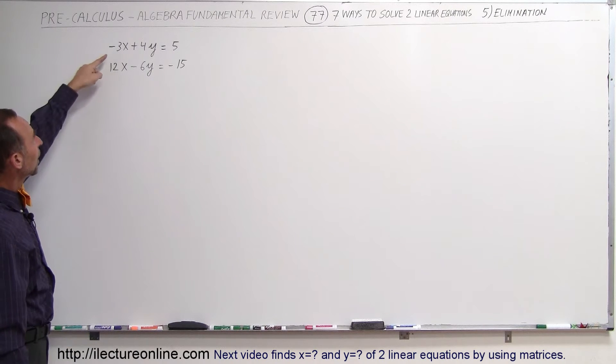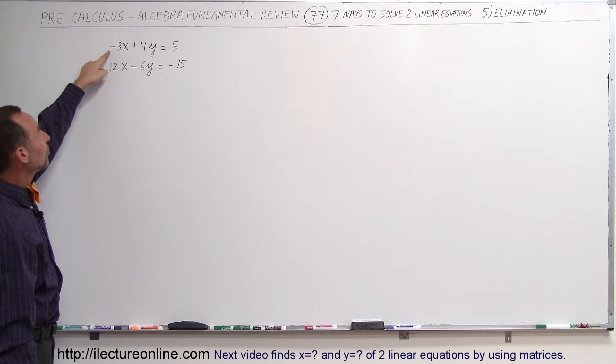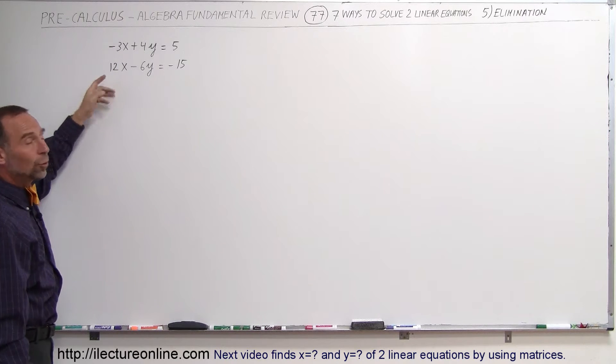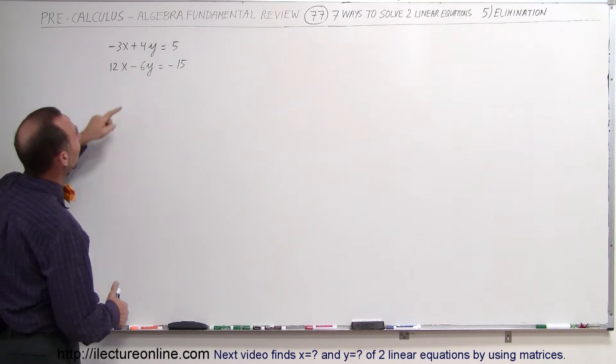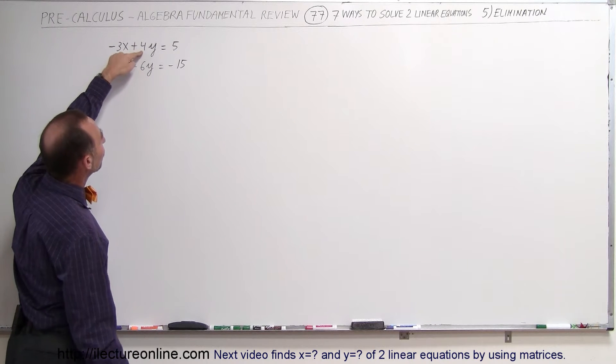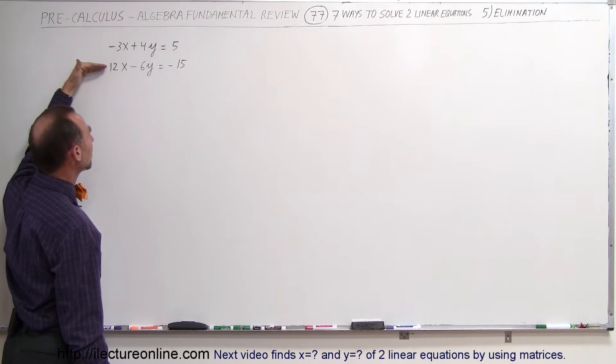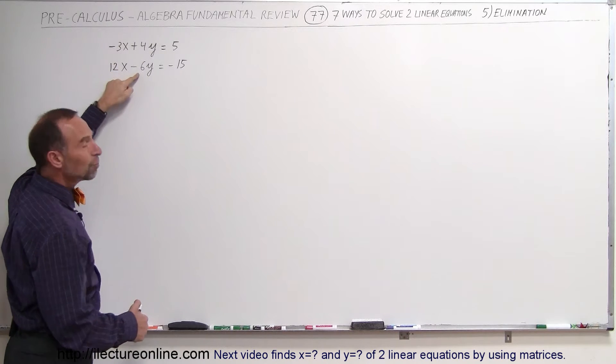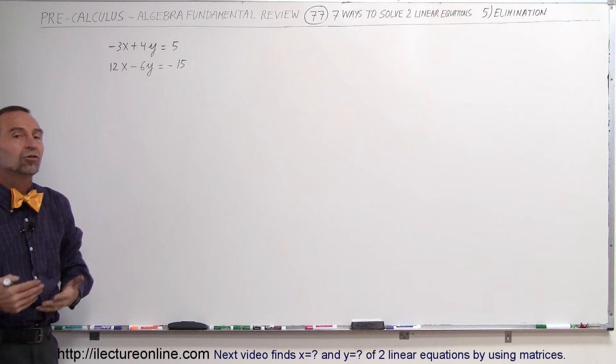For example, if I multiply the top equation by 4, then this becomes minus 12x. And when I add the two equations, the x's would get eliminated. Or, if I multiply the top equation by 3, this becomes plus 12y. And I multiply the bottom equation by 2, this becomes minus 12y. And when I add the two equations together then, the y's drop out.